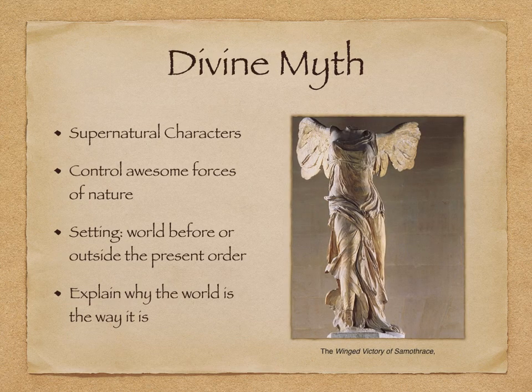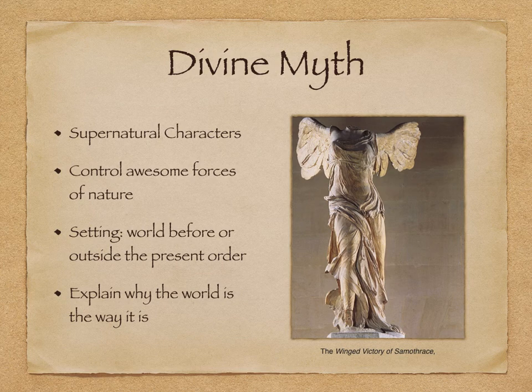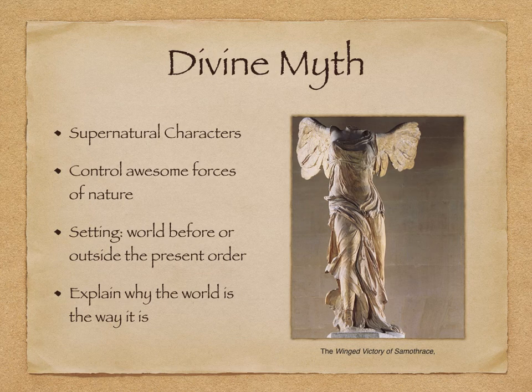First, divine myths. Divine myths are stories where supernatural beings are the main characters. Usually in divine myths it explains why the world is the way it is. These feature supernatural characters that are superior to human beings in power and in splendor. These could take the shape of human form or some other animalistic form. They usually have the power to control awesome forces of nature, and their own forms can be enormous and of stunning beauty or ugliness. Sometimes though they're little more than personified abstractions without clearly defined personalities.